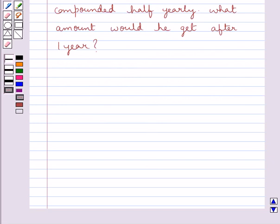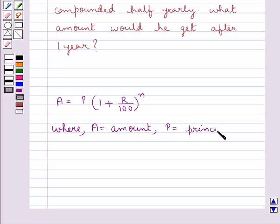The formula for amount that we use in this question is, A is equal to P multiplied by 1 plus R upon 100 whole to the power n, where A is the amount, P is the principal, R is the rate of interest, and N is the number of years.